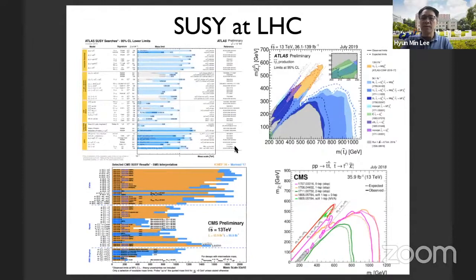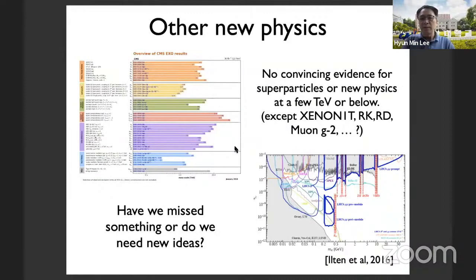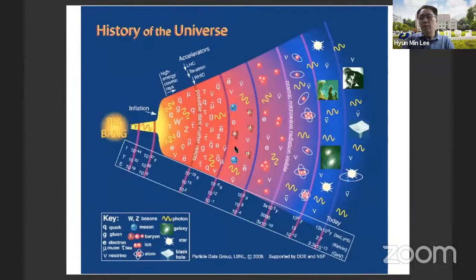We haven't found any evidence for superpartners at the LHC, as shown in this list of exclusion plots. Also, in searches for other new physics, there is no convincing evidence for new particles at a few TeV or below — except for interesting anomalies recently reported by g-2 of the muon, semi-leptonic decays of B mesons, or muon g-2. Nonetheless, have we missed something, or do we need new ideas?